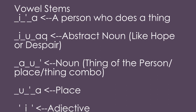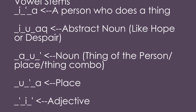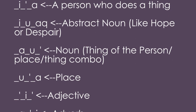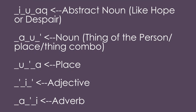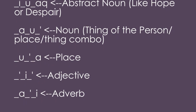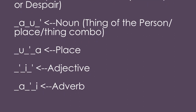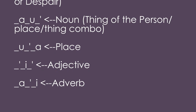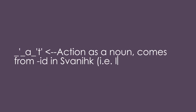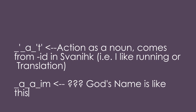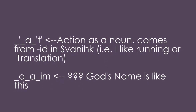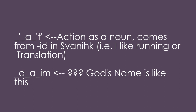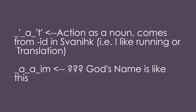A is a person who does a thing. U-ak is an abstract noun, like hope or despair. A-u-h is a normal noun, like a person, place or thing. U-h-a is a place. H-i-h is an adjective. H-i is an adverb. H-ach-t is an action as a noun — this comes from 'id' in Sphannuck — like running or translation. And then A-A-I is a sort of honorific noun, like God or the first prophets.